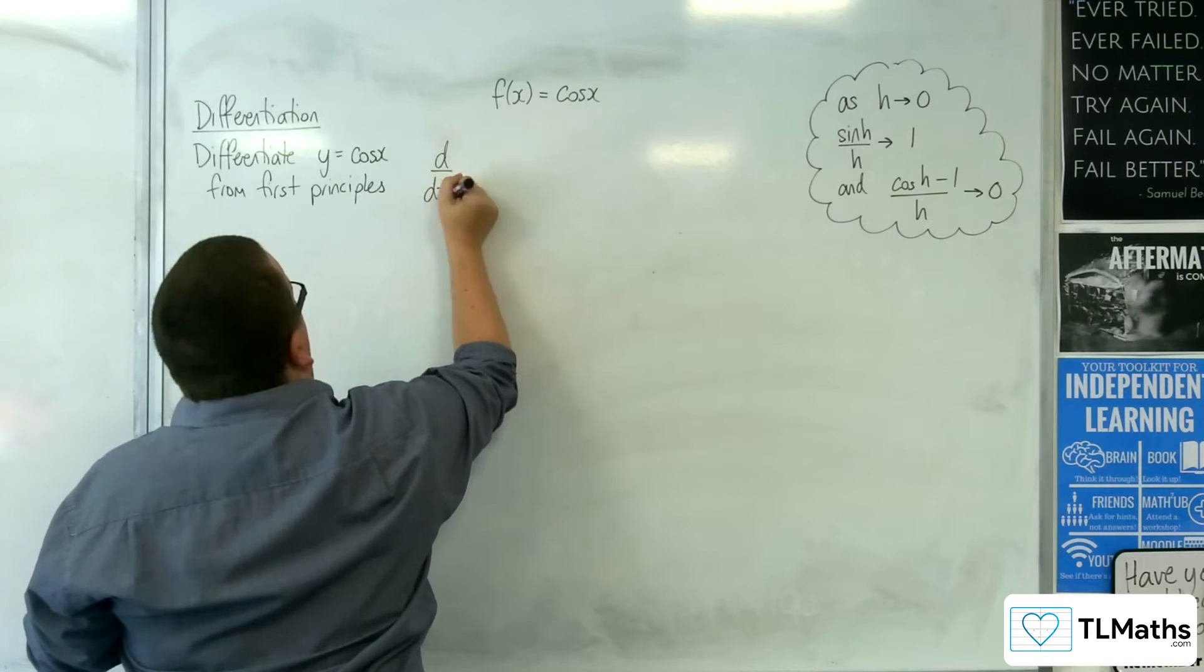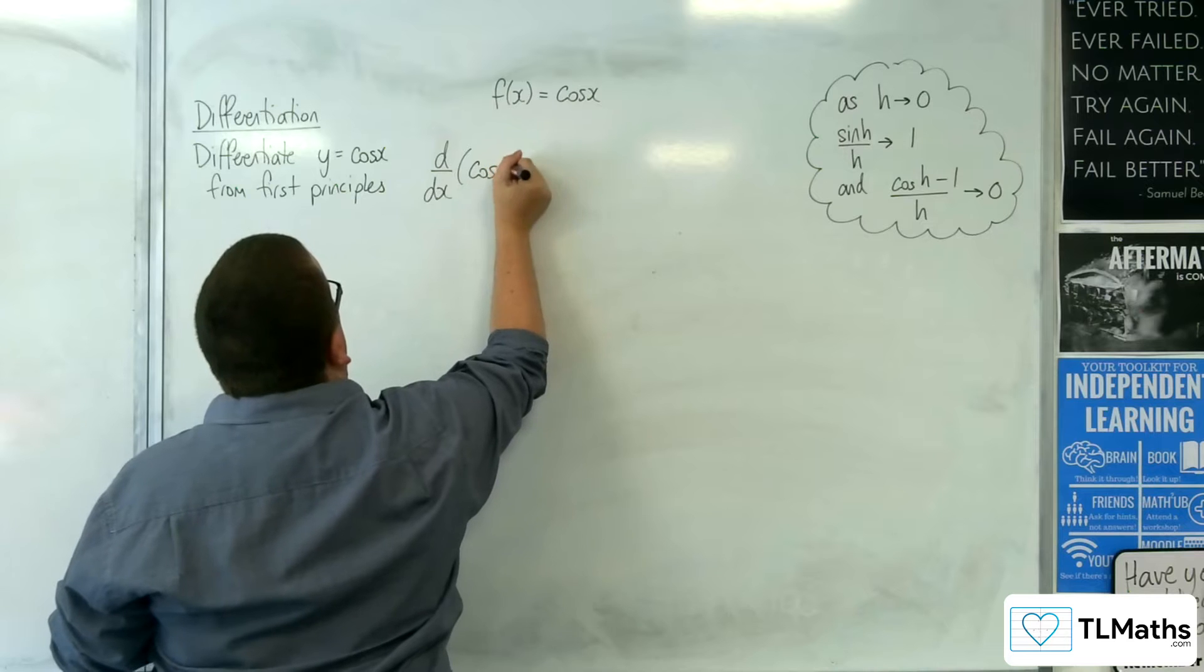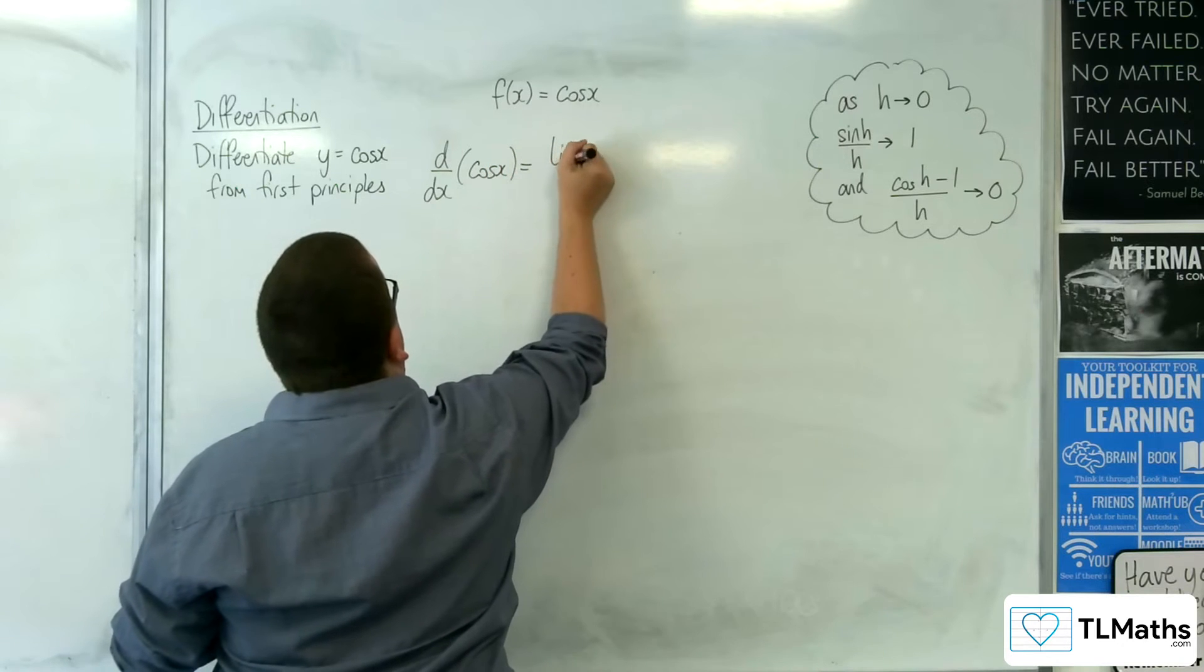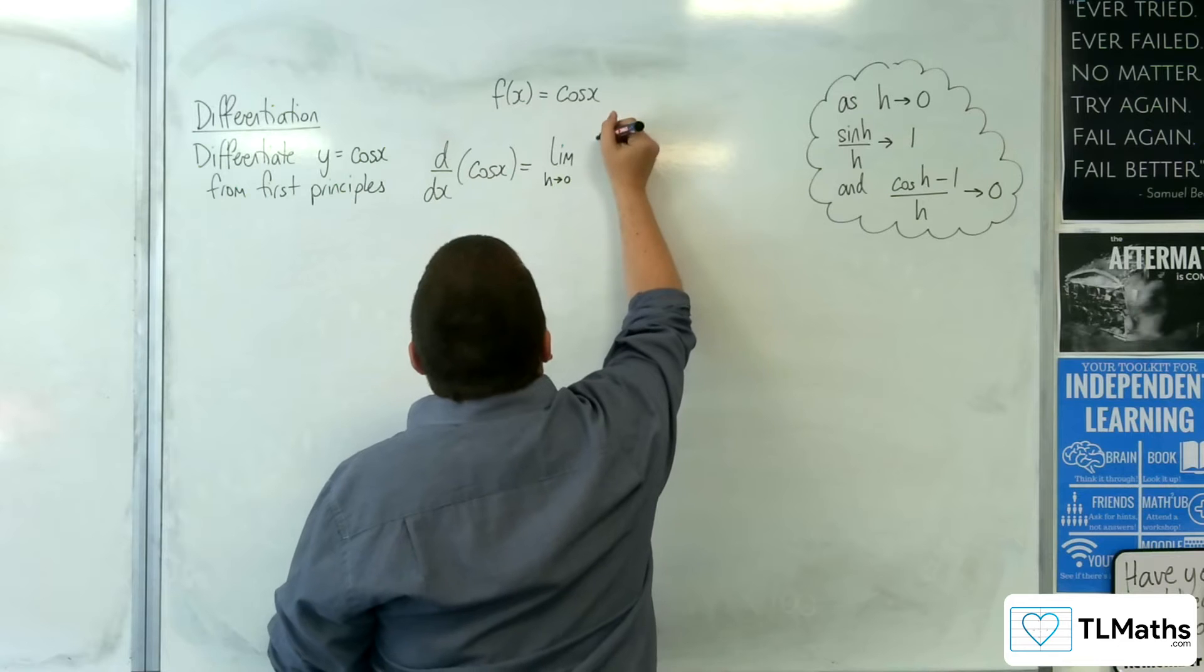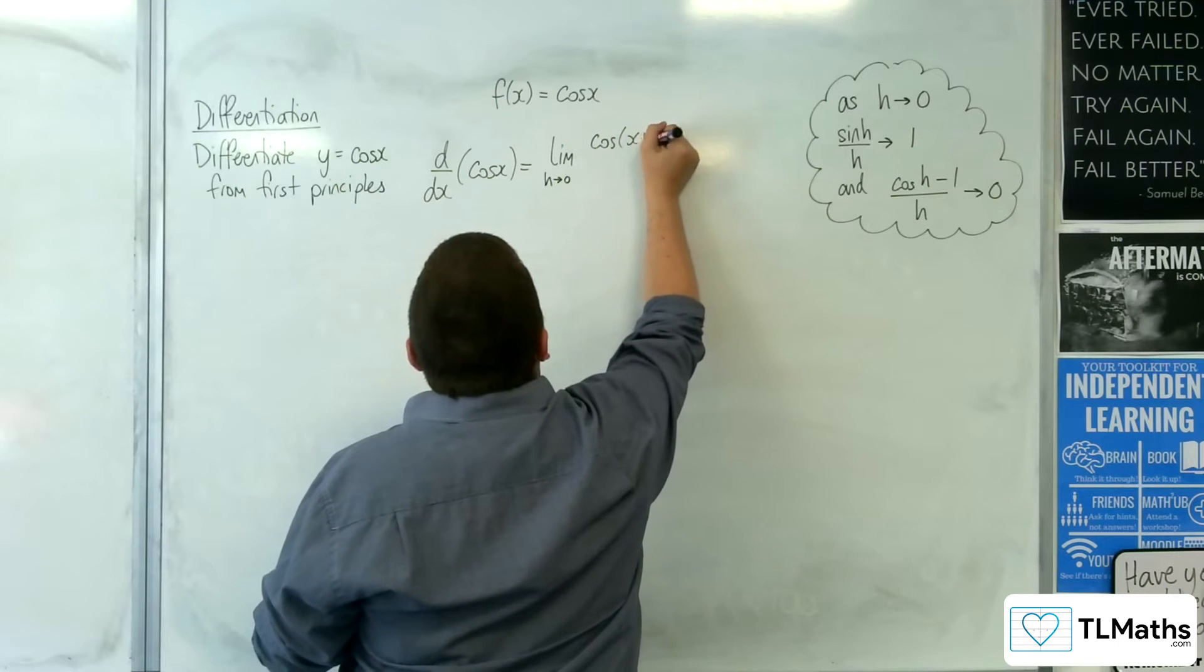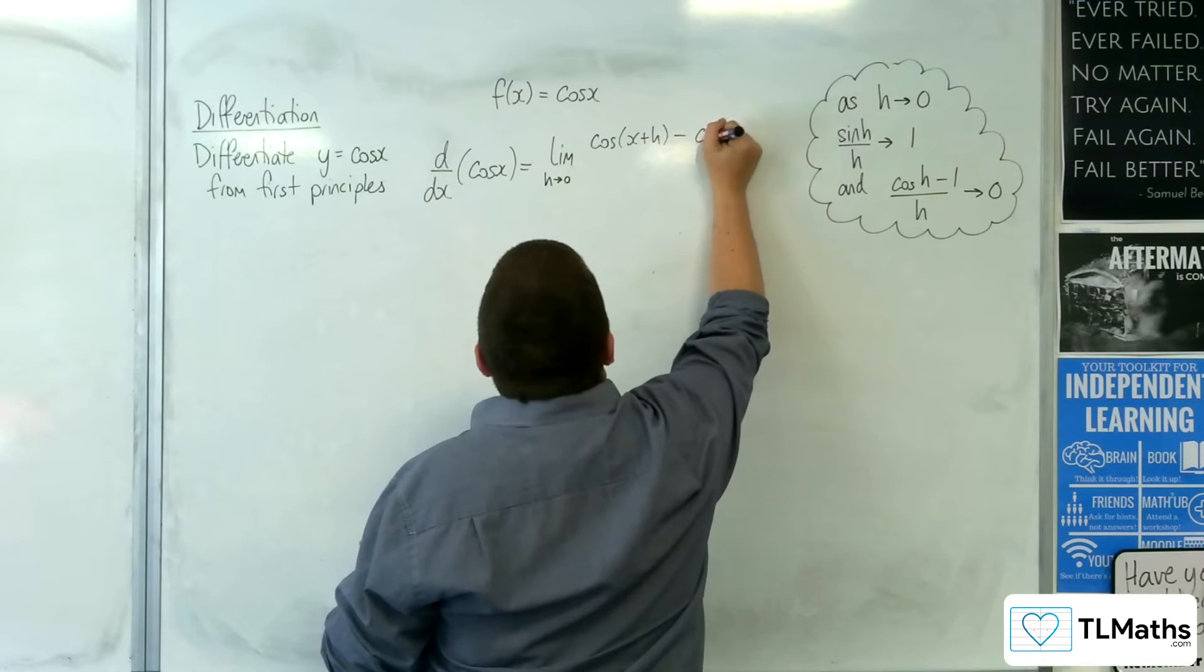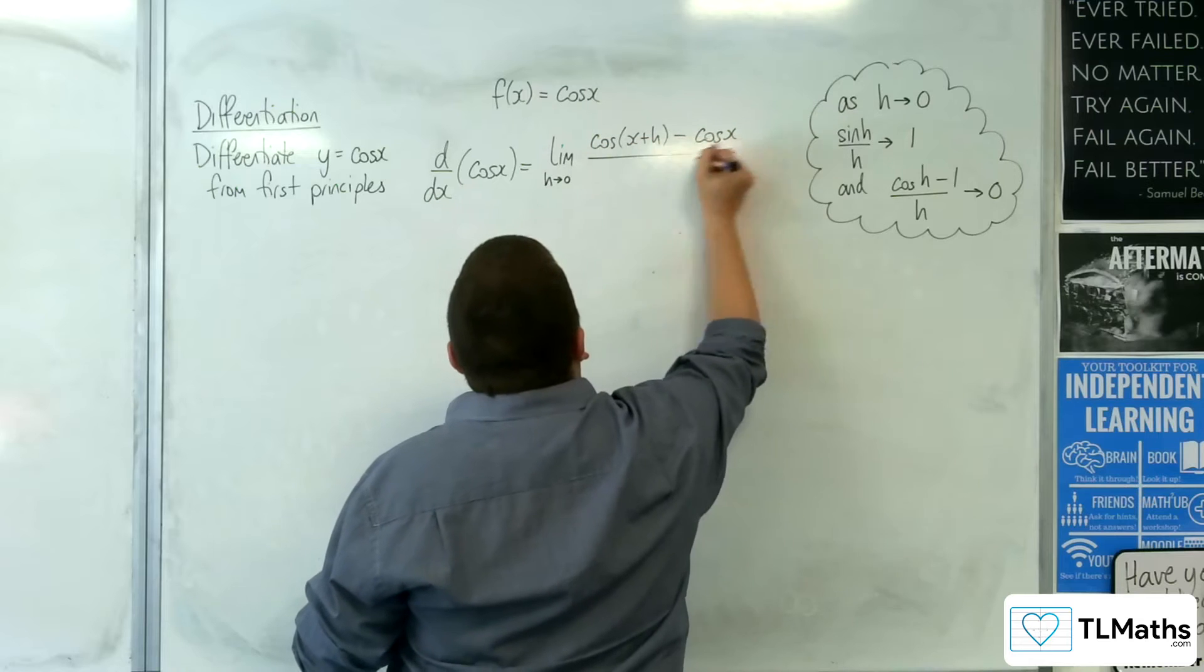So in this case f of x is cosine x. So d by dx of cosine x is equal to the limit as h tends to 0 of f of x plus h, so cosine of x plus h, take away f of x, so cosine x, all over h.